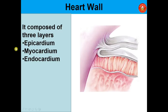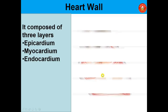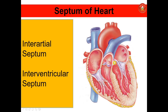The heart wall is composed of three layers: the outermost epicardium, the muscular myocardium, and the innermost endocardium. The septa of the heart include the inter-atrial septum between the two atria and the interventricular septum between the two ventricles. The interventricular septum has two parts: a membranous portion superiorly and a muscular portion inferiorly. The left ventricle covers a large area, giving the septum a crescent shape.